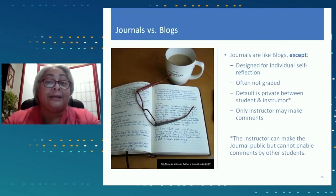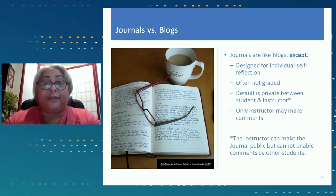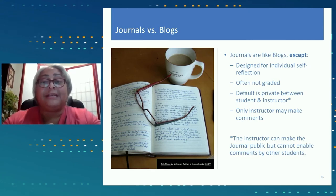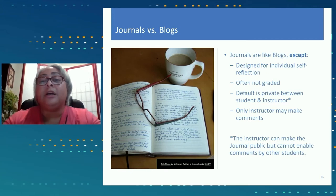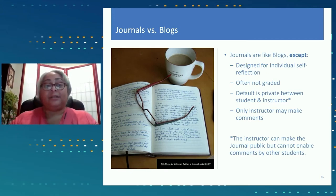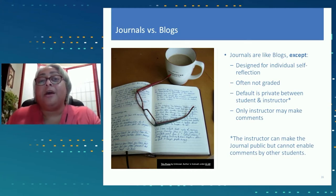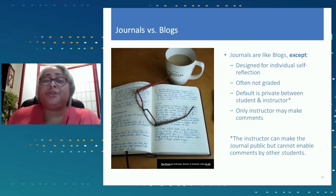Journals are similar to blogs except they're designed for individual self-reflection. They're usually not graded, though they can be. The default setting is private between the student and the instructor. The instructor can make journals public so students can read each other's posts, but other students cannot comment — only the instructor can make comments. It's a great tool to get students more engaged with the content and provides a more private space for students to open up about thoughts or ideas they don't want to share publicly.